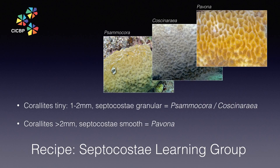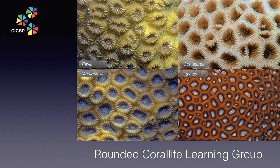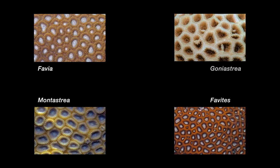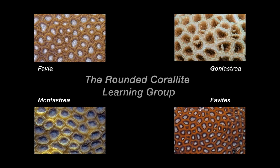So that's the end of the septocosti learning group. Learning groups are worth committing to memory, as they solve a common problem you will encounter on any dive. Now here is the subject matter for our next learning group. Pause this video to familiarise yourself with the separate and common wall pages of the massive key group of the coral finder. Notice how four genera occur more than once: Fabia, Montastria, Fervites, and Goniastria. Each of these genera have more or less rounded coralites, but with different wall structures. Together, they make up the rounded coralite learning group.